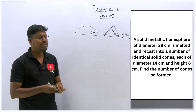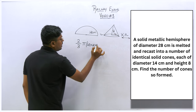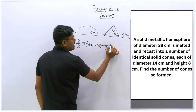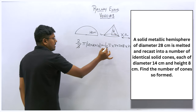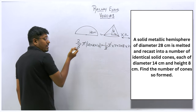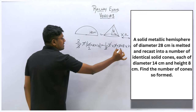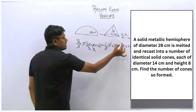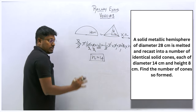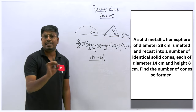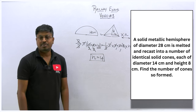Volume of hemisphere = volume of n cones: 2/3 π(14)³ = n × 1/3 π(7)²(8). Cancel 3, π. Simplify: 2 × 14³ = n × 7² × 8. Cancelling factors of 7 and 2 gives n = 14. So 14 cones can be made from the hemisphere.